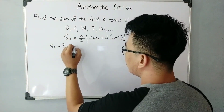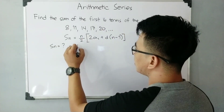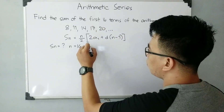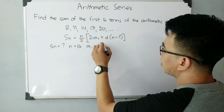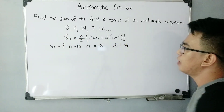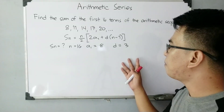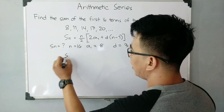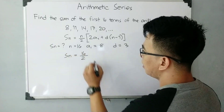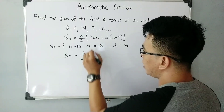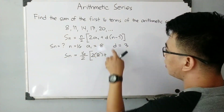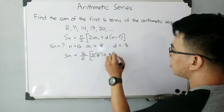The value of n is 16, since we are looking for 16 terms. A sub 1, the first term, is 8. The common difference d is 11 minus 8, which is 3. Now let's plug in the values: S sub n = 16/2 times (2 times 8 plus 3 times (16 minus 1)).